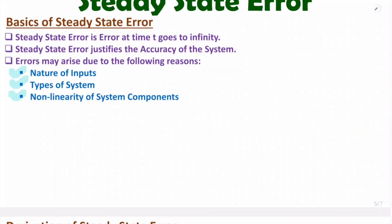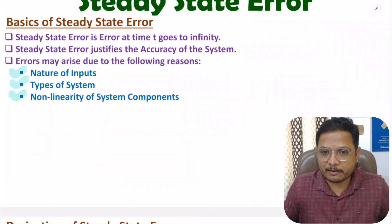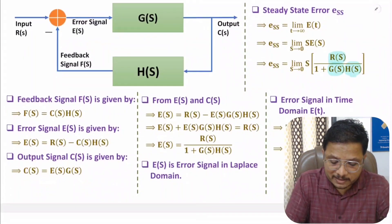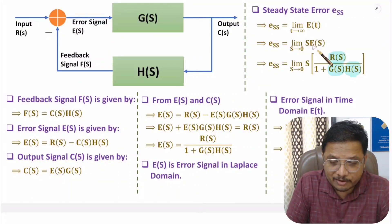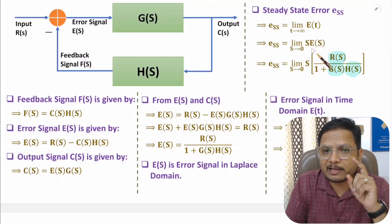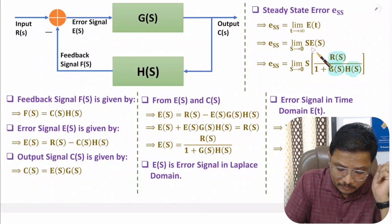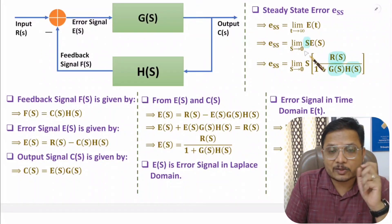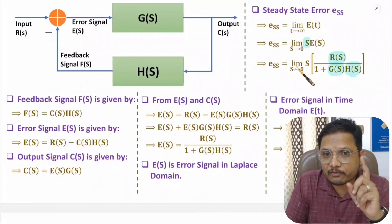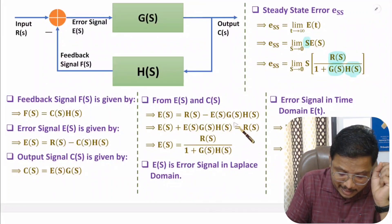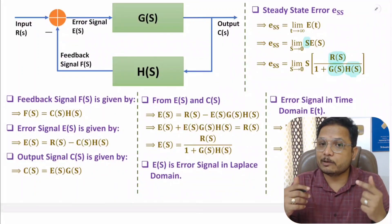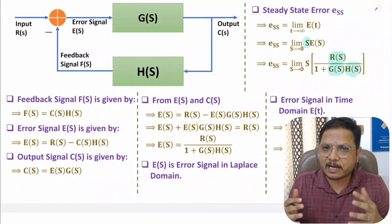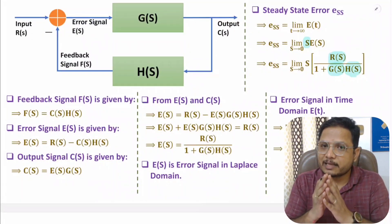Now you should have a fair idea about what steady state error is and how to identify it. Remember these equations: steady state error equals limit as t→∞ of e(t), and in the Laplace domain it is limit as s→0 of s·E(s). I have seen students make mistakes when calculating steady state error using the Laplace domain — they forget to multiply by s. Always remember to multiply s with E(s), and E(s) equals R(s) divided by 1 plus G(s)·H(s). In upcoming videos, I will solve many problems based on these equations. Thank you for watching.